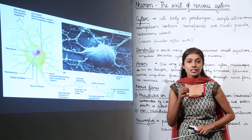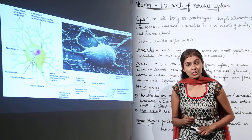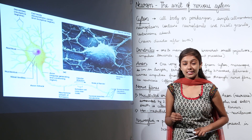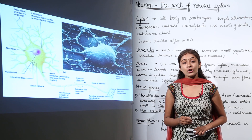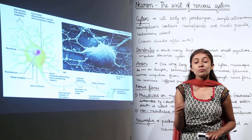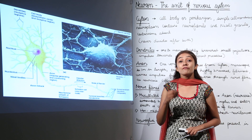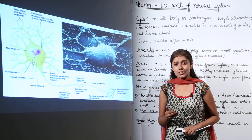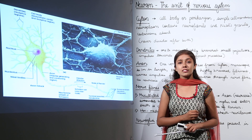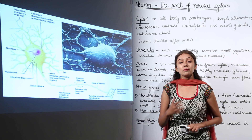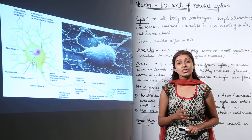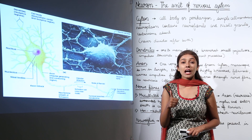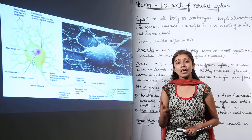When your nervous system receives stimulus from your sense organs, it converts that stimulus into impulses. Those impulses are transformed into messages and sent to effectors — your muscles and glands — which act accordingly. This coordinated nervous system is mainly made up of nervous tissue, which has three main components: neurons, nerve fibers, and neuroglia.